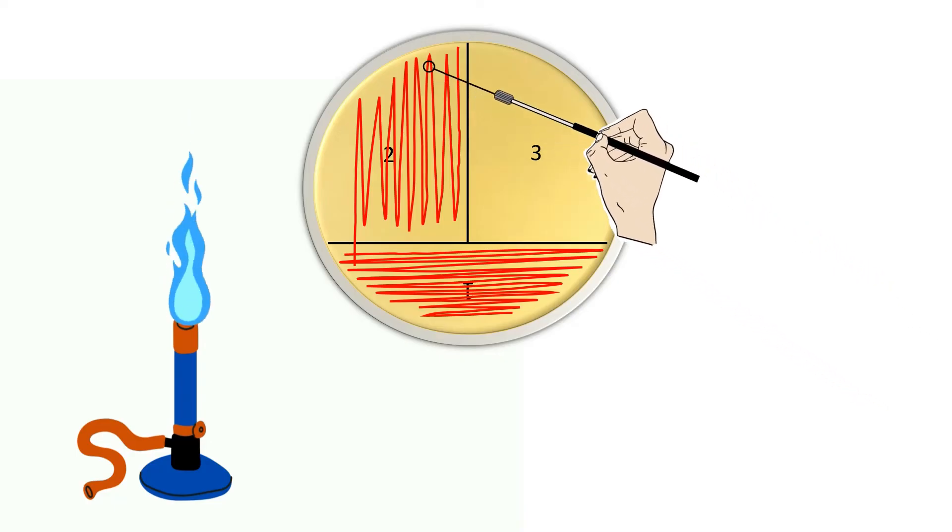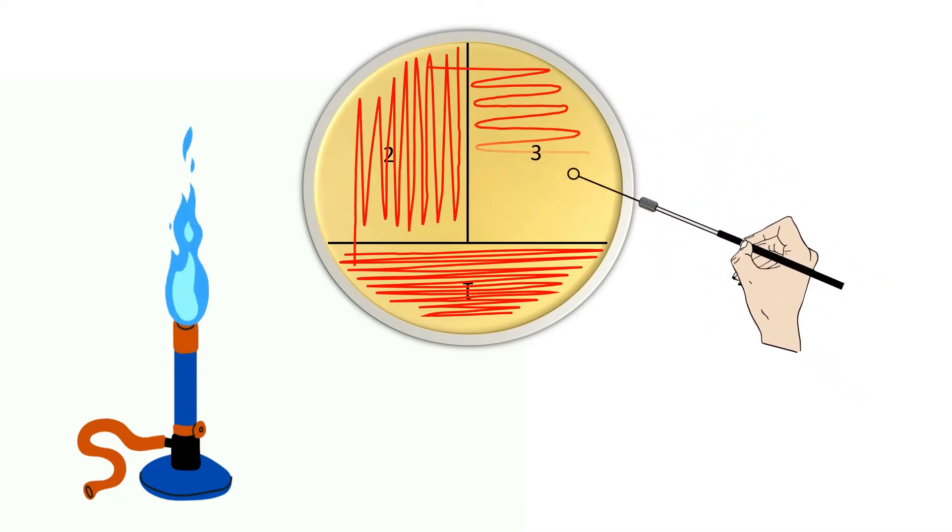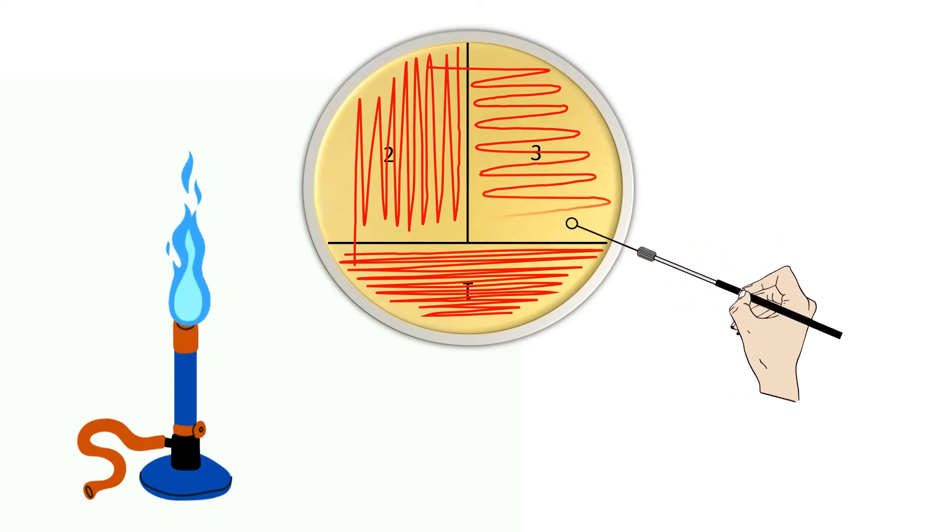Now drag the loop from the corner of area 2 into area 3 and streak back and forth in area 3.